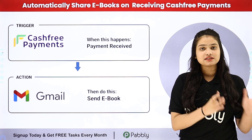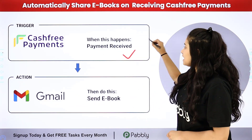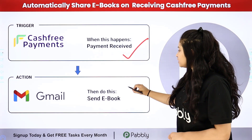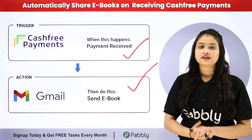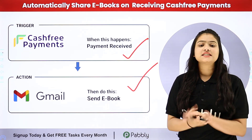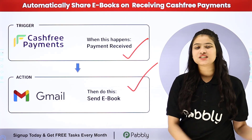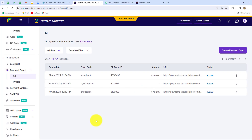Pabbly Connect works on two principles: trigger and action. In the trigger we are going to take Cashfree, and in the action we are going to take Gmail, and we will connect both of them to automate this entire process. We are going to learn how to share ebooks automatically with customers on receiving the payment for that same ebook through Cashfree.